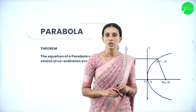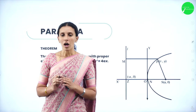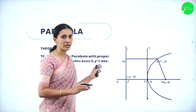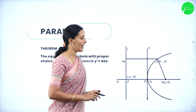Let us derive the equation of a parabola. We have a theorem: the equation of a parabola with a standard choice of coordinate axes is y² = 4ax. This is called the standard form of a parabola, and it expresses y in terms of x.